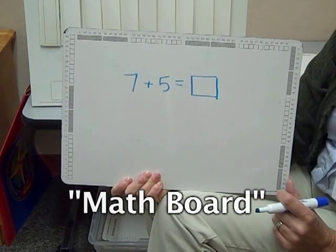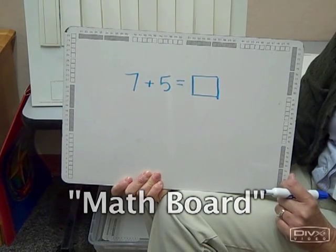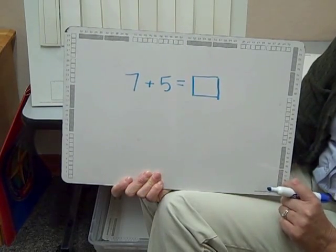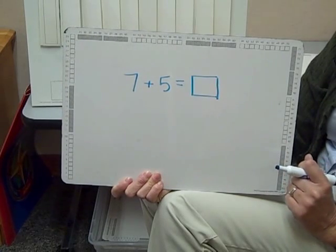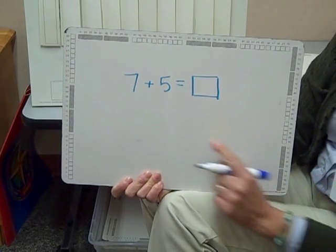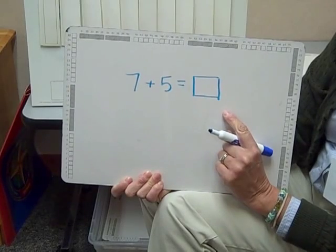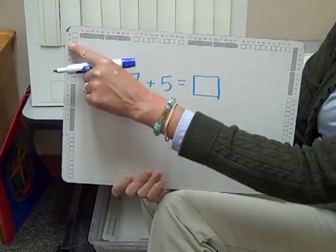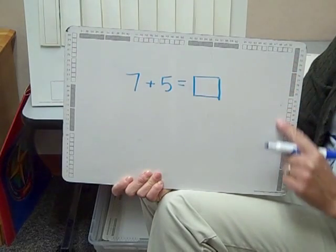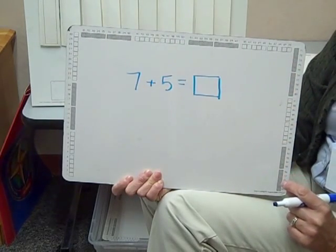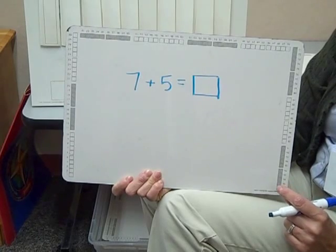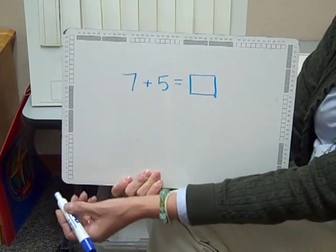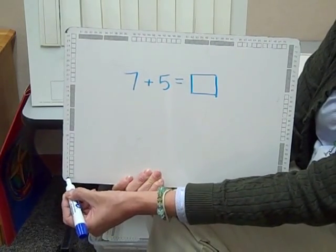This is a math board that students use starting in first grade. Each student uses a board and writes on it to show their thinking. If a student was working to solve seven plus five, they might start by using a number path that goes around their board. It's different from a number line in that it's not straight, and it also represents a counter square.